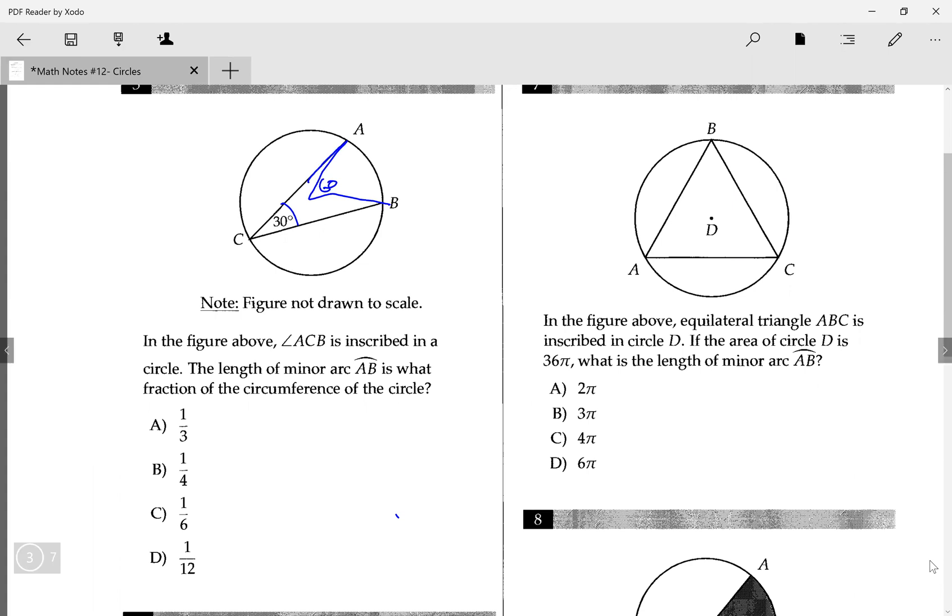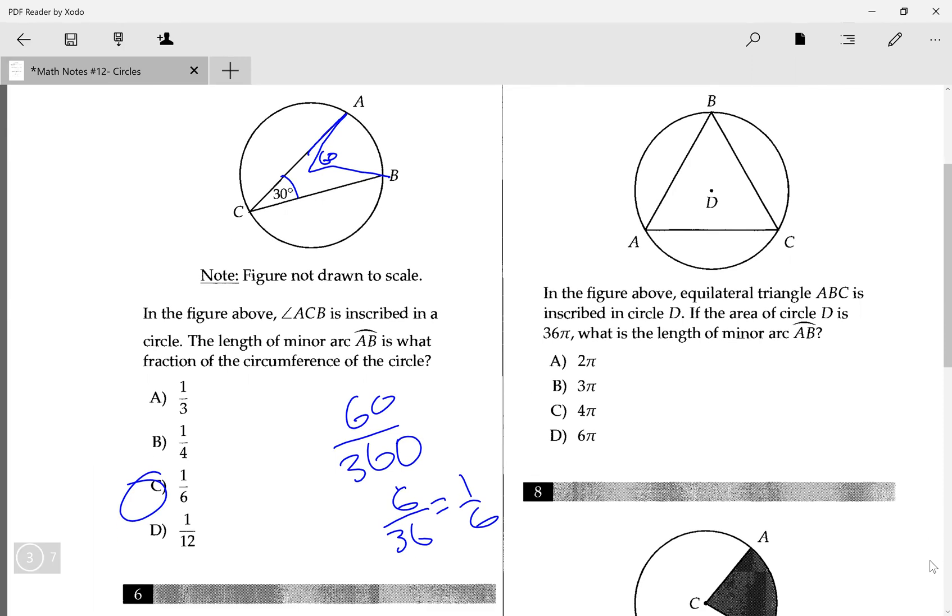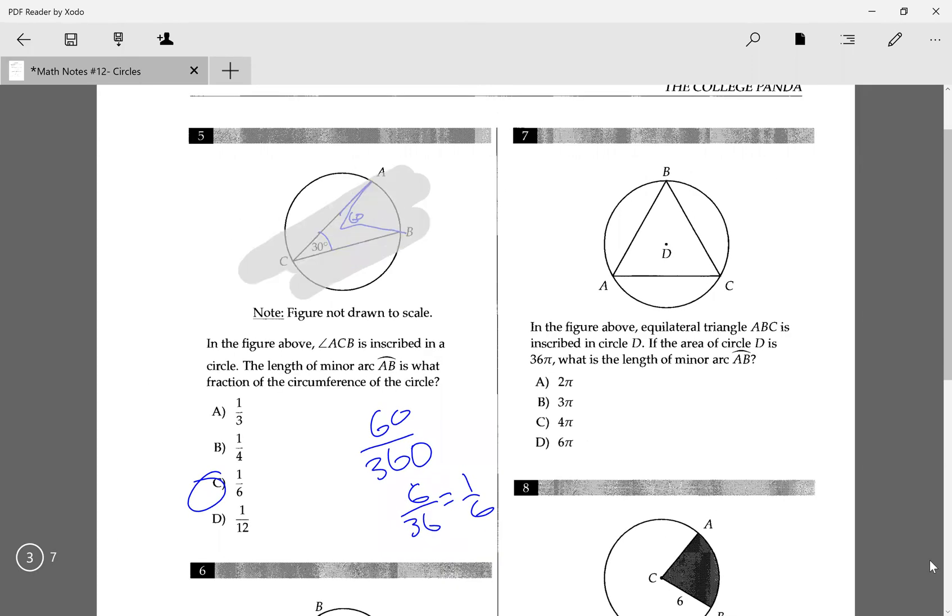So that means that the arc length is going to be 60/360. And this would just be 6/36, which is equal to 1/6, which is why C is the right answer there. So that's how you use inscribed angles to translate to a central angle to find the ratio.